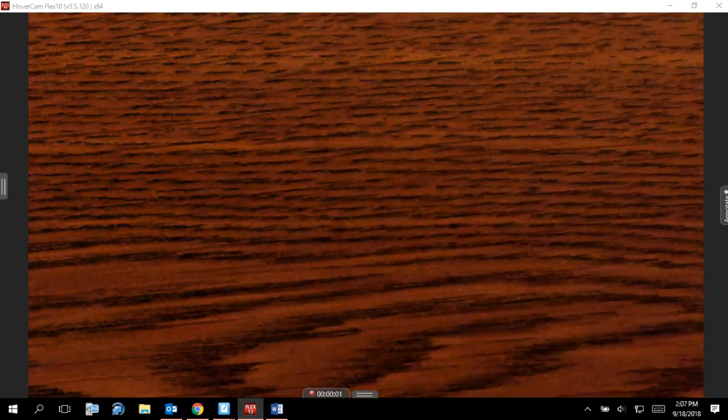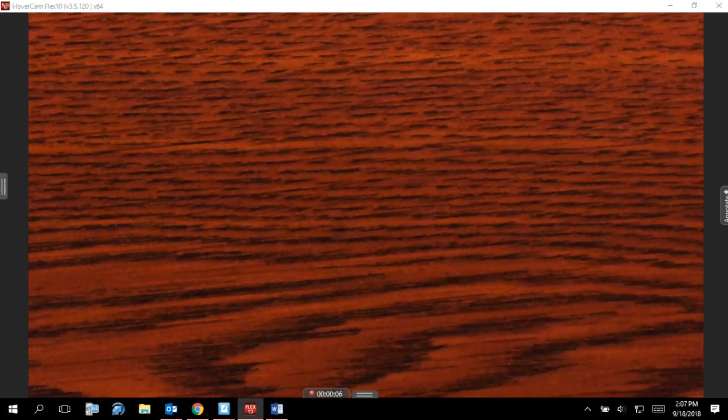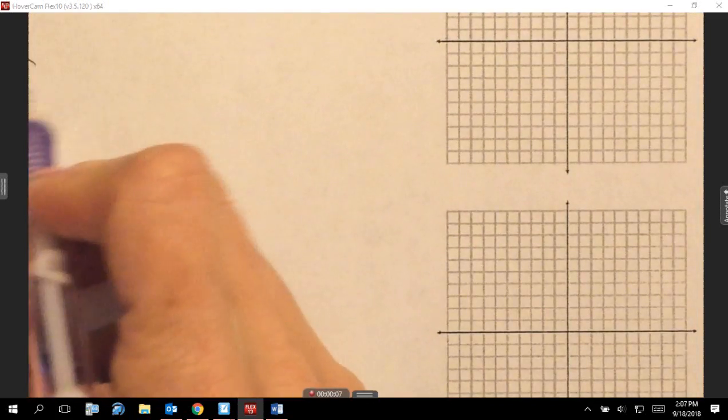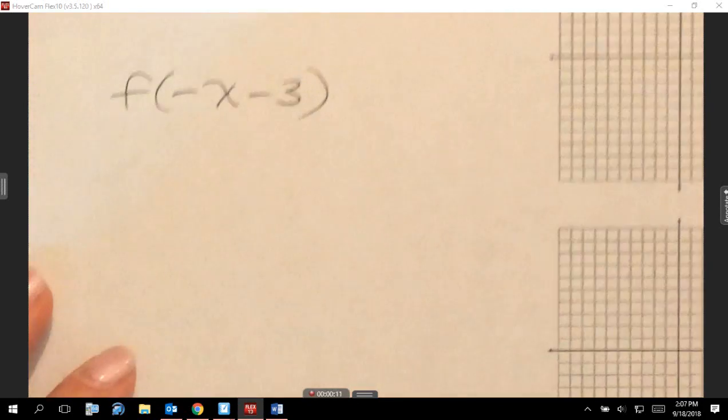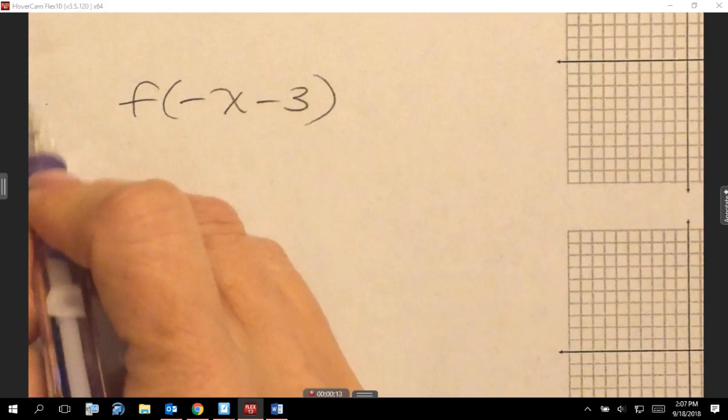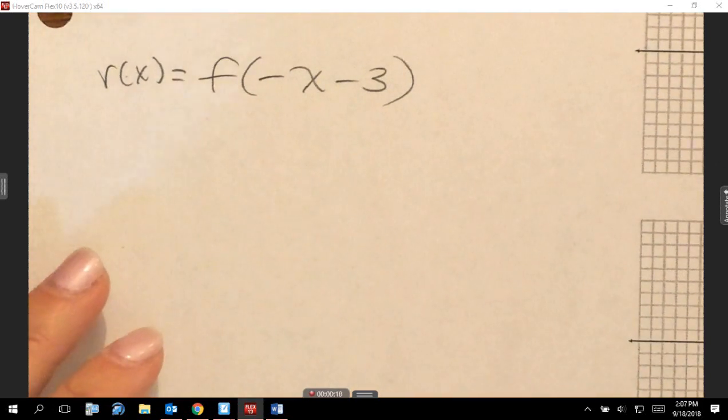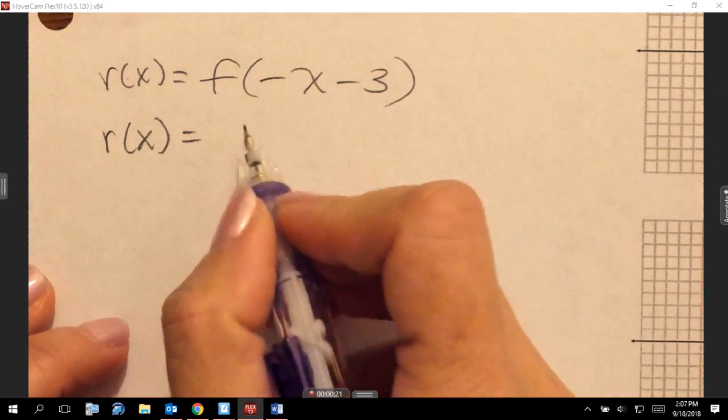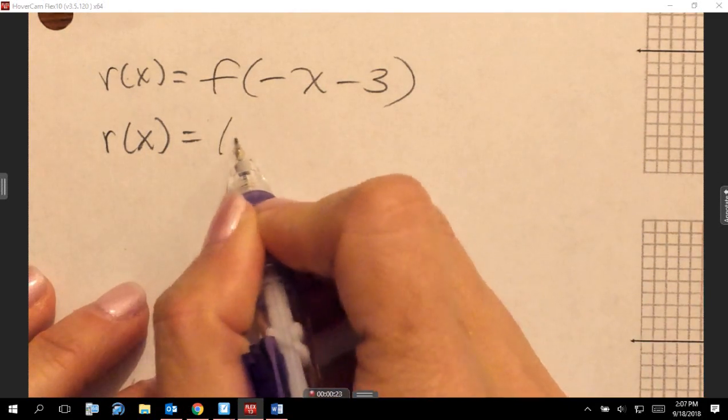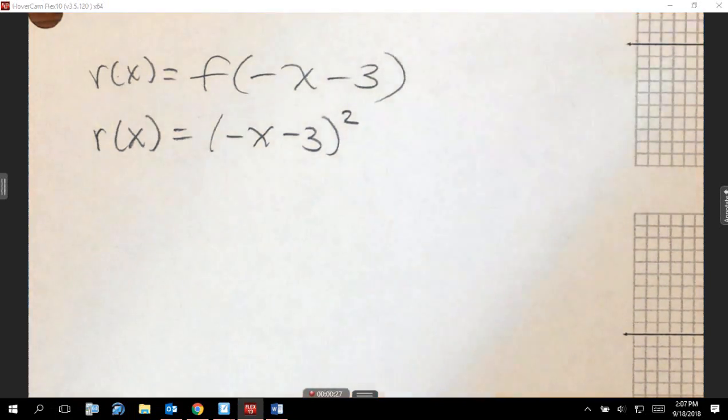Okay, so number 12 told us that r of x was equal to f of negative x minus 3. So you guys should have been able to say that's going to be negative x minus 3 squared. That would be the equation.